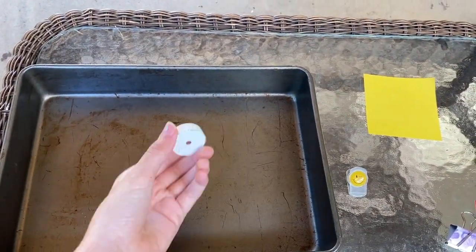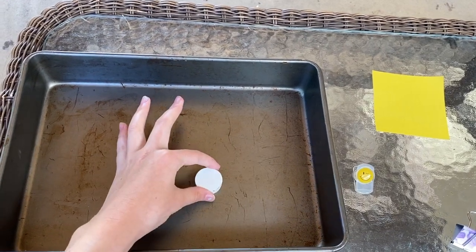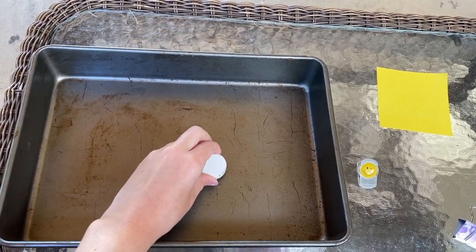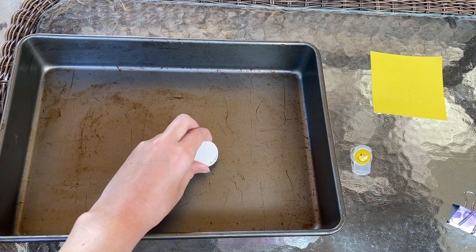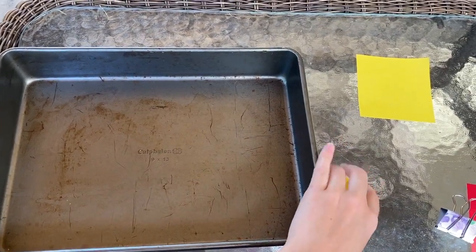And then this white circle that was on the fridge, sticking to the metal pan, so that means it's magnetic. And then you can just try with all of your objects.